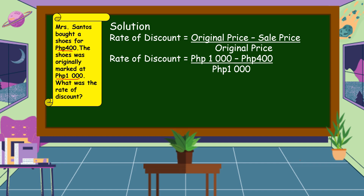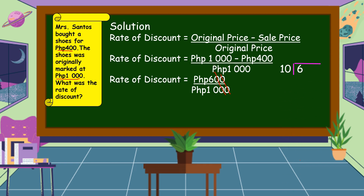1,000 pesos minus 400 pesos equals 600 pesos, and we copy 1,000 pesos as the denominator. Both 600 and 1,000 are divisible by 100, so we can cancel two zeros in the numerator and denominator. The remaining number in the numerator is 6 and in the denominator is 10. Dividing: 6 ÷ 10 = 0, then we add a decimal point.